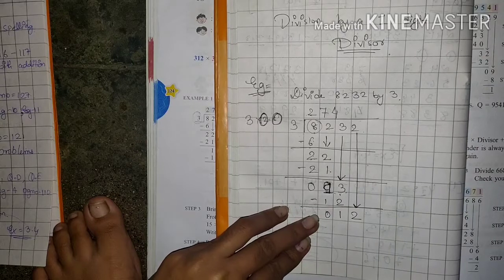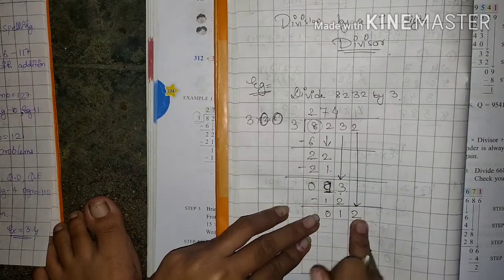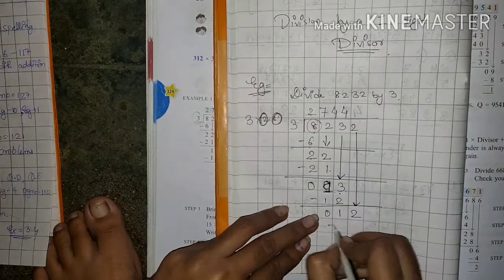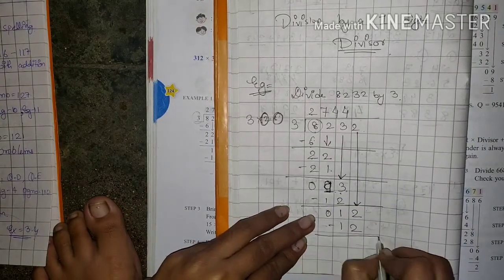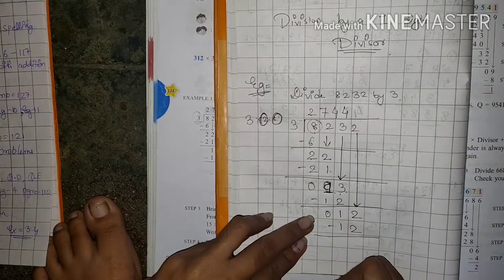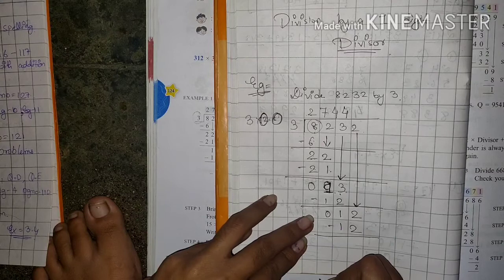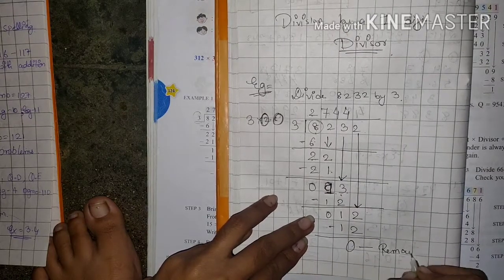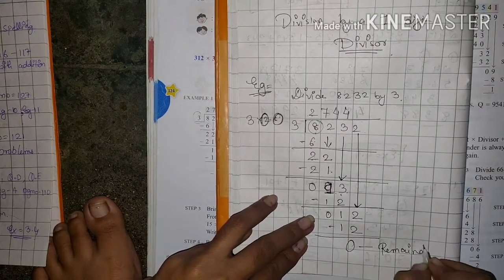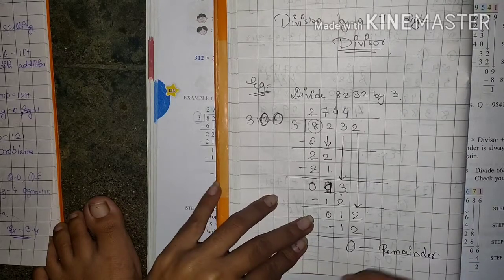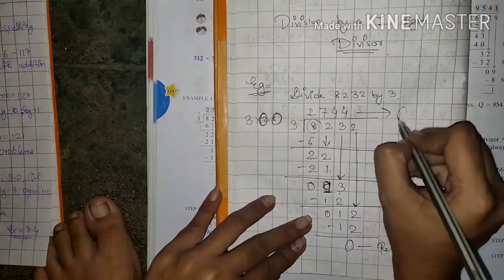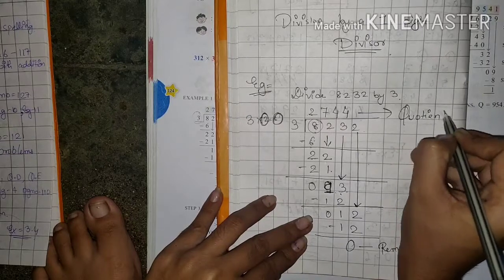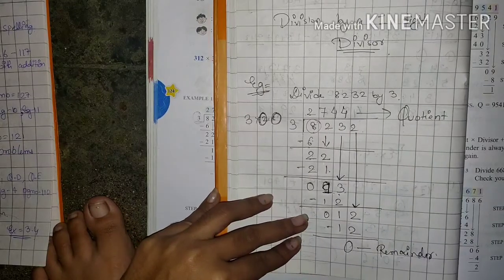Now we bring down the 2. So 12 has come. In the 3 times table, how many times does 12 come? 4 times. So we write 4 here, then write 12 below. And 12 minus 12 is 0. What do we call this? Remainder. And what do we call this? Quotient.